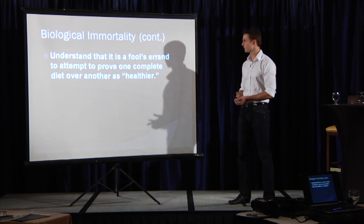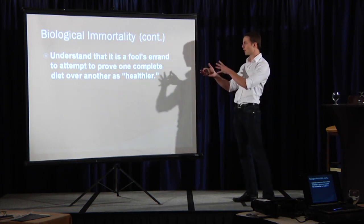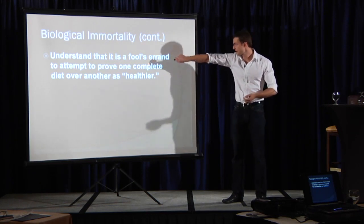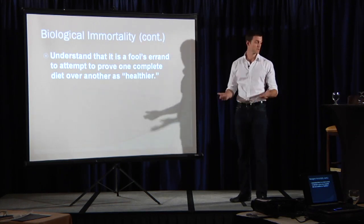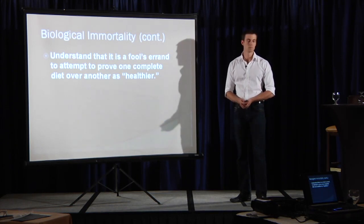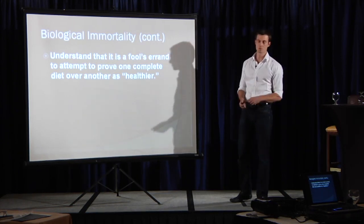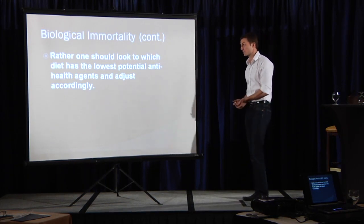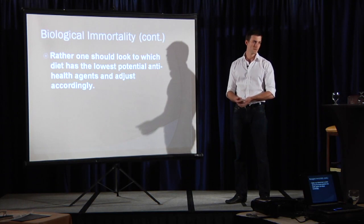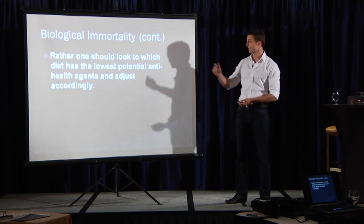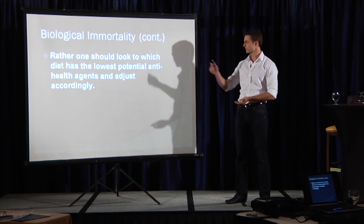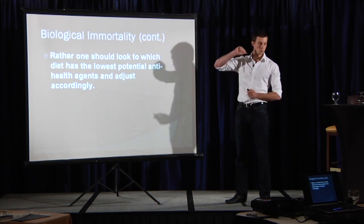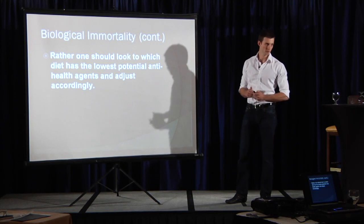And I want you to understand too, it's a fool's errand to attempt to prove one complete diet over another is healthier. And I underline, underscore, circle, complete, meaning all the essential nutrients are present and accounted for. Because then you get people saying three more grams of starch will kill you. Rather, I would suggest that you look to see which has the lowest potential anti-health agents and adjust to that. I'm a facts and evidence guy. That's the thing that makes sense to me. Those are the things that are going to kill you. Once you're to a level of health as I defined earlier, you improve your functional capability with the strength training.